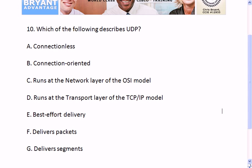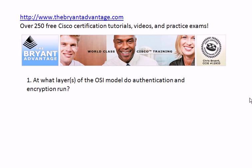We'll go back up to question one and start going through the answers. Authentication runs at layer seven — that's the application layer. Encryption actually runs one layer lower, L6, the presentation layer.